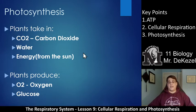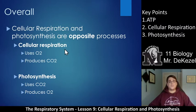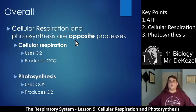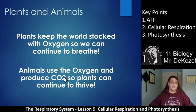So these two processes are complementary — one goes one way and one goes the other. You would not be able to have plants without animals and vice versa, because animals produce CO2 while plants use it. It goes in a cycle. Overall, cellular respiration and photosynthesis are opposite processes. Cellular respiration uses O2 and produces carbon dioxide, while photosynthesis uses carbon dioxide and produces oxygen. Understanding this very important relationship is key for this lesson. Essentially, plants keep the world stocked with oxygen so we can continue to breathe, while animals use the oxygen and produce CO2 so plants can continue to live. They're a symbiotic relationship.